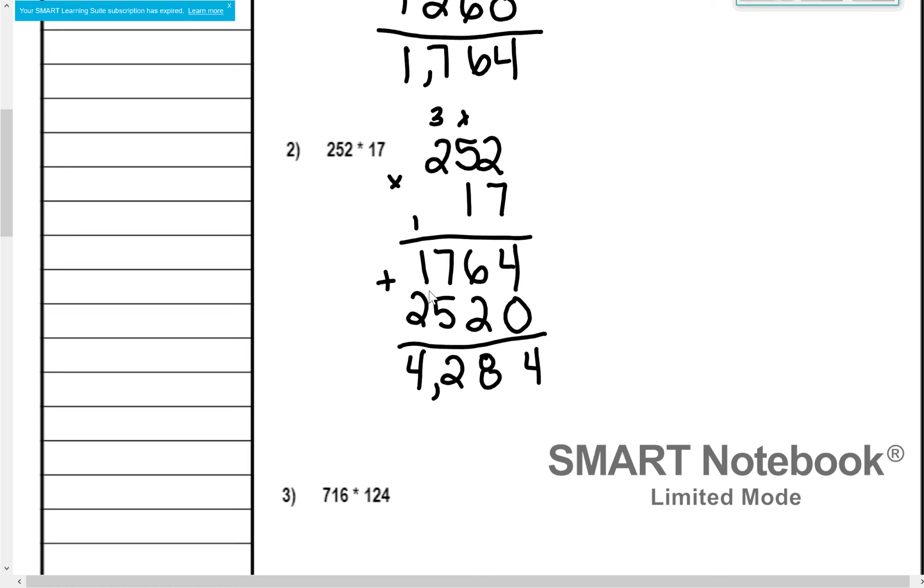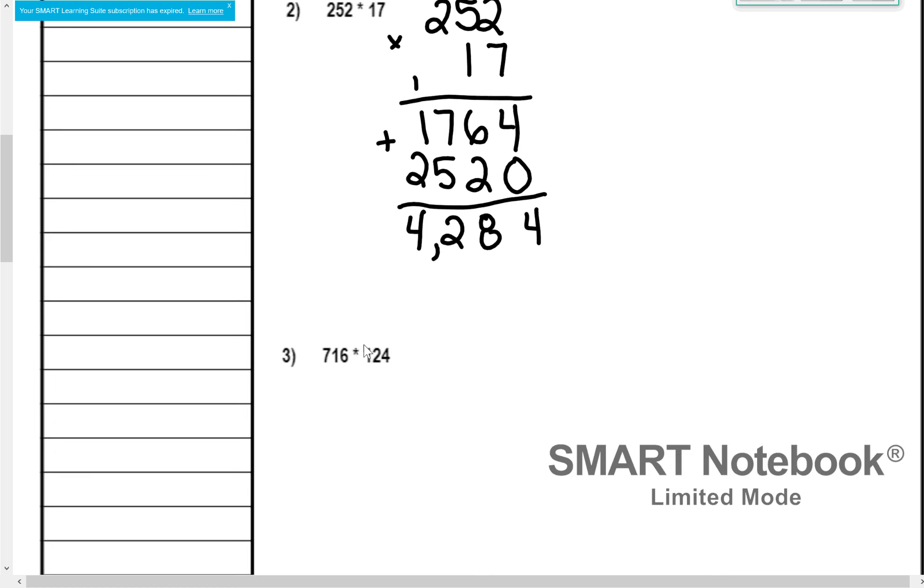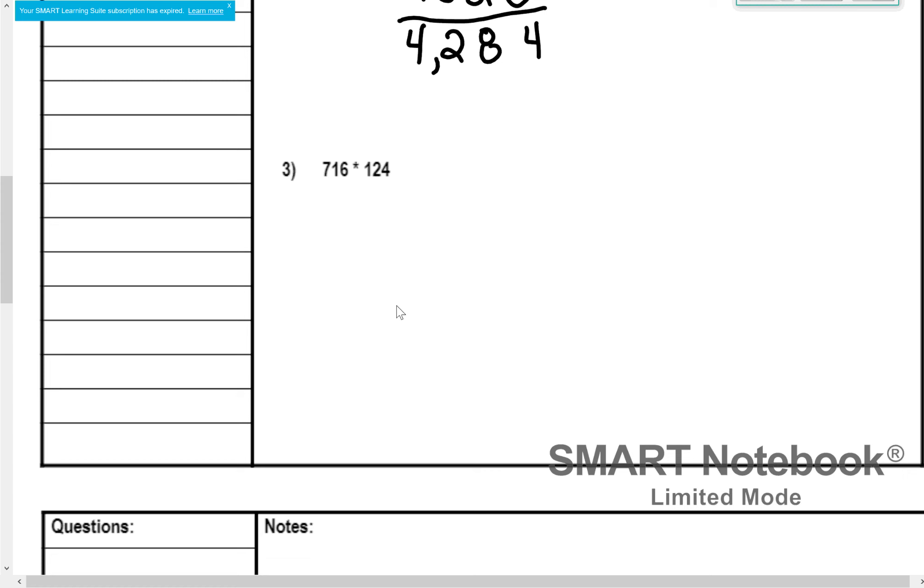All right, so now we are going to move on to a 3-digit multiplied by another 3-digit. Okay, it's going to be the exact same process, it's just going to take us a little longer. So my first step is always going to be the same. I'm going to stack them on top of each other vertically, making sure my 1s place lines up, 10s and 100s. All right, and again, I'm just going to start that 1s place. So 4 times 6 is 24, so I write down my 4 and carry my 2. 4 times 1 is 4, 5, 6. Cross off that since I used it. 4 times 7 is 28, and I don't have anything to add. And I'm out of numbers, so I write down my 28.